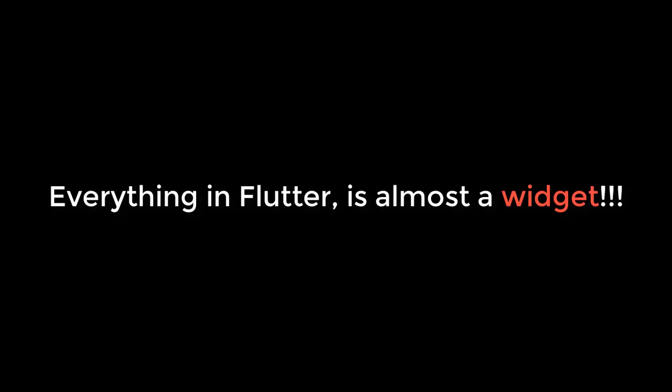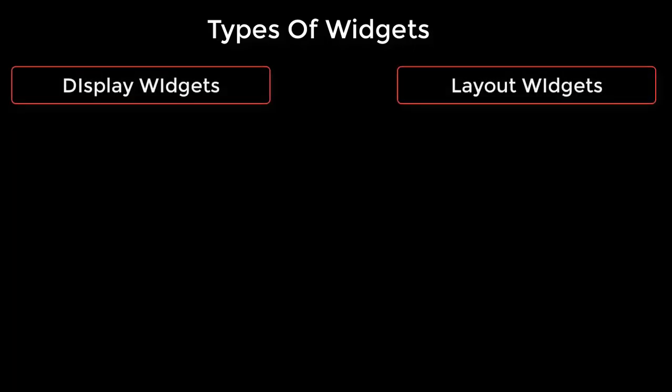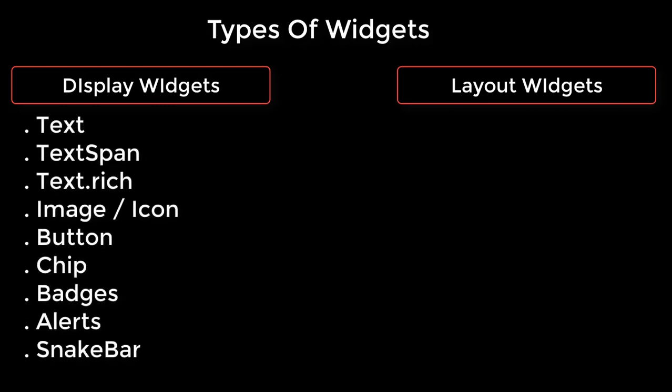So how many types of widgets are there? We don't have any specific type of distribution. I normally divide these widgets into display widgets and layout widgets. Display widgets include the text widget, text span, text dot rich, image, icon, buttons, and cards. These are things that help us to display our content.